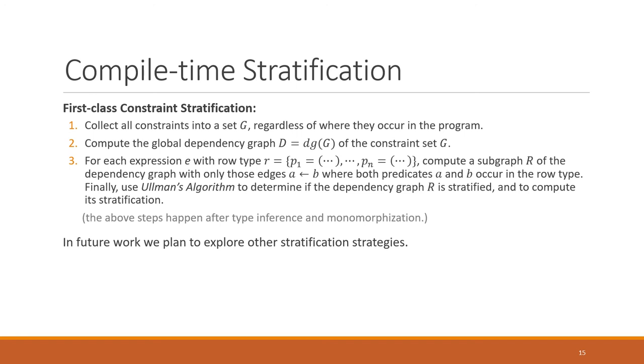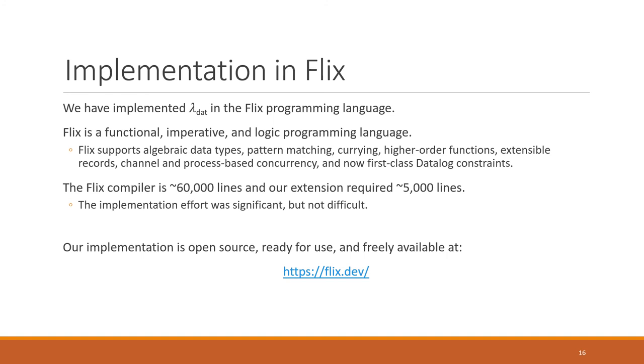And so what we propose is the following algorithm. We assume we have the entire lambda Datalog program. We're going to take all the constraints in that program, regardless of where they occur. We're going to build the dependency graph or the precedence graph for all of these constraints. And then the key idea is that we look at every expression that has some row type. In the row type there will be some predicates that give types to the terms. And the point is that if a predicate does not occur in the row type, then the expression cannot evaluate to a Datalog program with that predicate. And that allows us to only consider the parts of the dependency graph where both predicates occur in the row type. So in other words, we can take this global dependency graph and we can reduce it to a smaller dependency graph. And then we check whether that dependency graph is stratified and compute its stratification. Now I just want to point out there's a huge design space for different ways of doing this. But this is our first attempt at solving this problem.